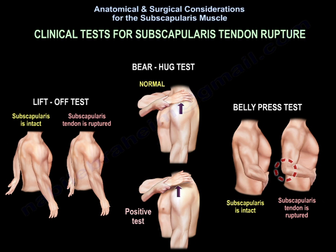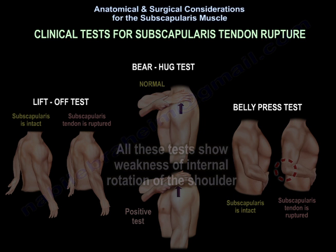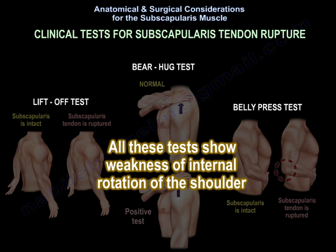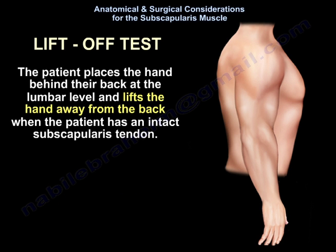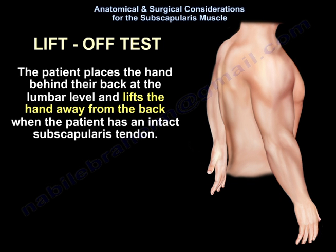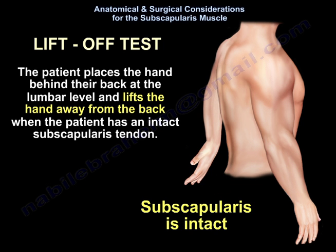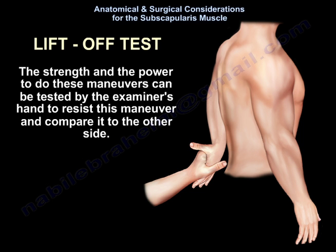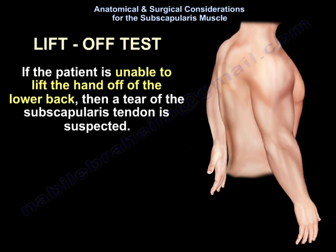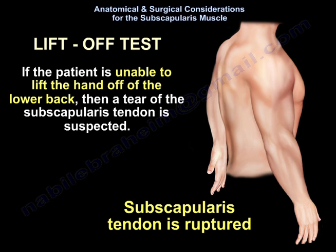Clinical tests for subscapularis tendon rupture all demonstrate weakness of internal rotation. The lift-off test: the patient places the hand behind their back at the lumbar level and lifts the hand away from the back when the subscapularis tendon is intact. The examiner can resist this maneuver and compare strength to the other side. If the patient is unable to lift the hand off the lower back, a tear of the subscapularis tendon is suspected.